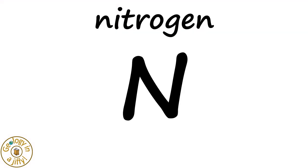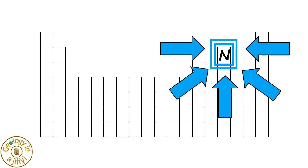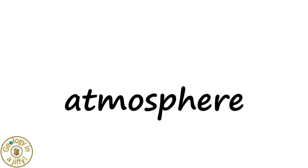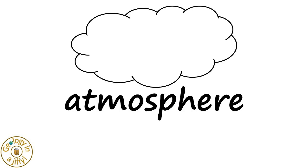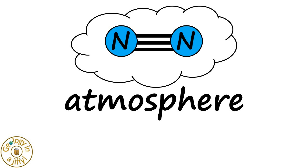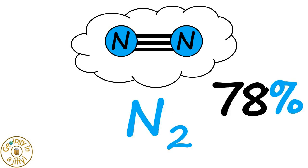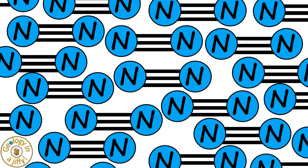Nitrogen, with the symbol capital N, is found here on the periodic table and is modelled with a blue ball as one atom of nitrogen. In our atmosphere, nitrogen is found as a gas, as molecules of two atoms bonded together with the formula N2, making up 78% of our atmosphere, which is a lot.